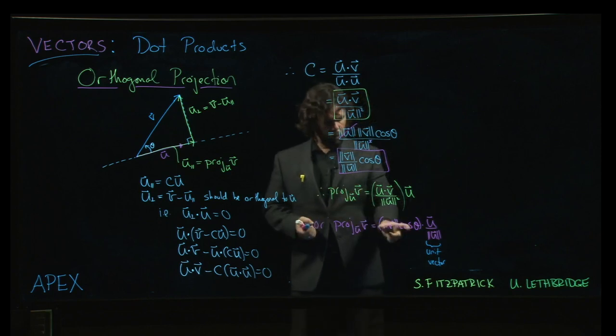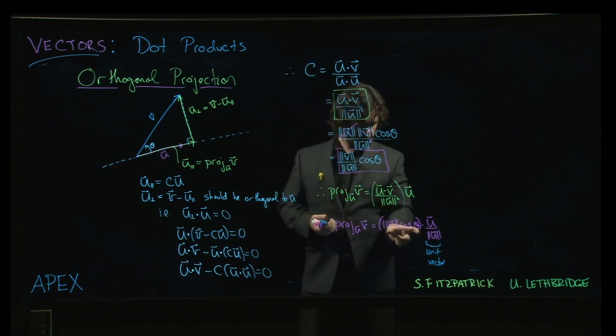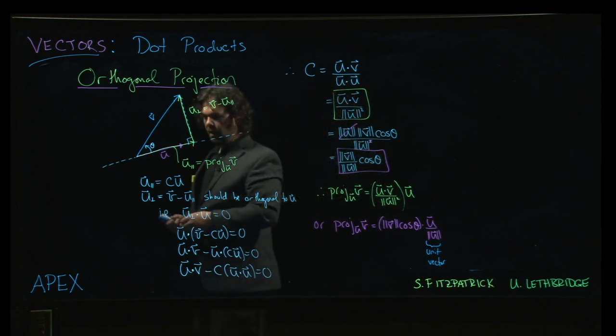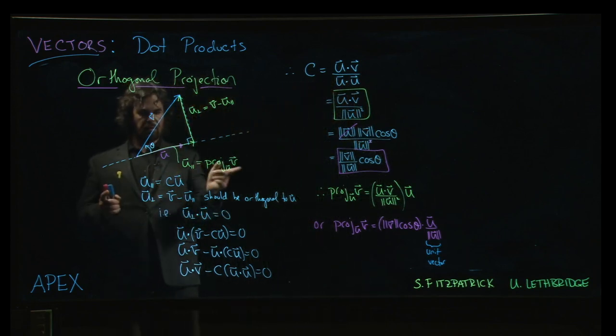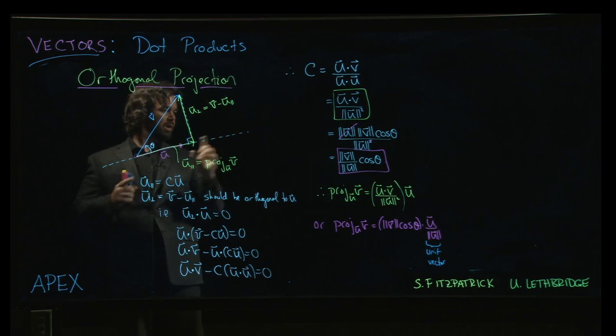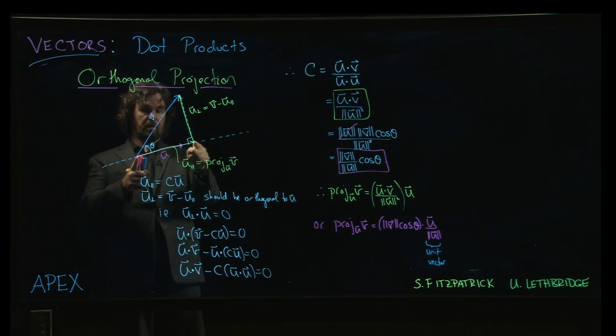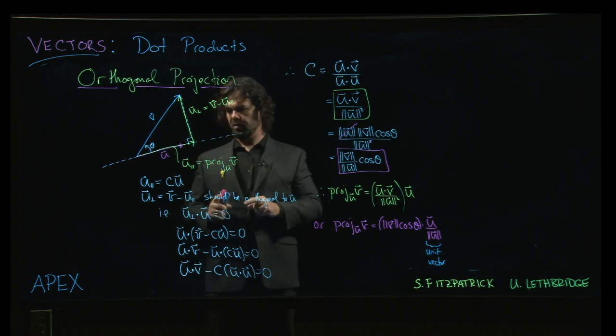And then this quantity here, that's sort of the scale factor. So you start with the unit vector in the direction of u. This amount, magnitude of v times cos theta, tells you how much you have to stretch that unit vector to get the projection. This projection, which gives you the vector in the direction of u so that when you drop this perpendicular down, the perpendicular meets at the tip of that vector.